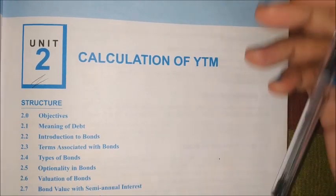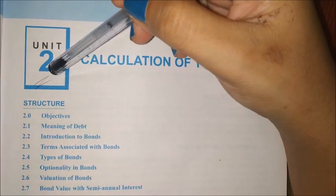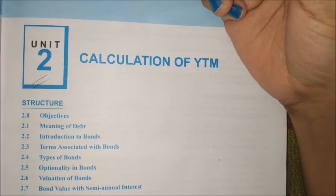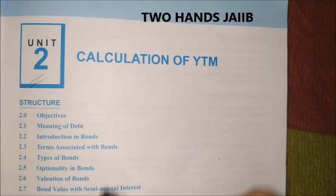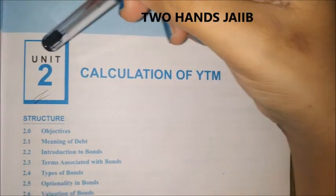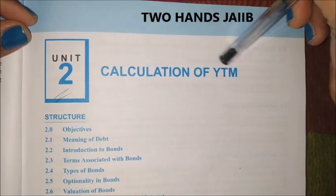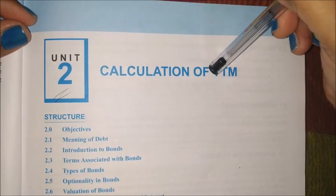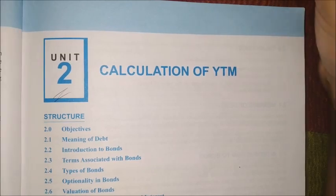Hello friends, today we are going to discuss Unit 2 of Accounting and Finance for Bankers, which is our second exam for JIB. The name of our chapter is Calculation of YTM. The full form of YTM is Yield to Maturity.